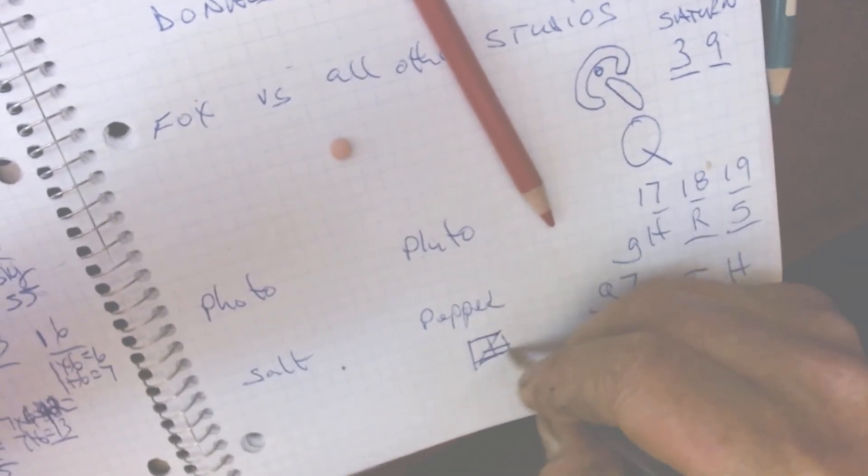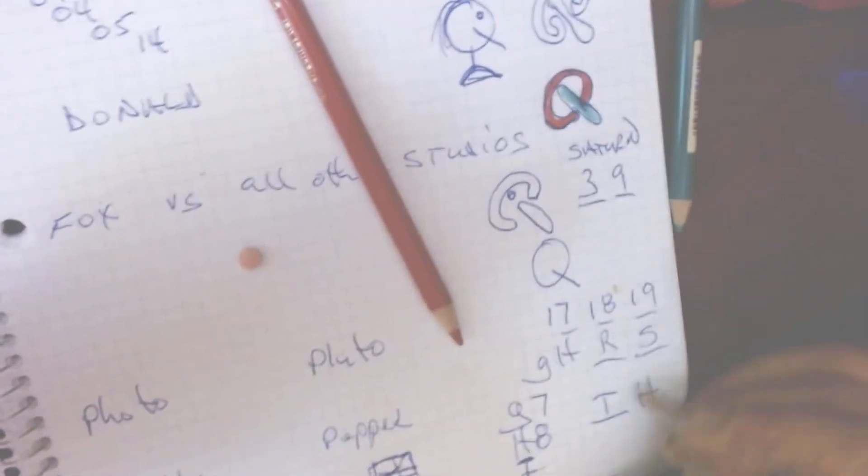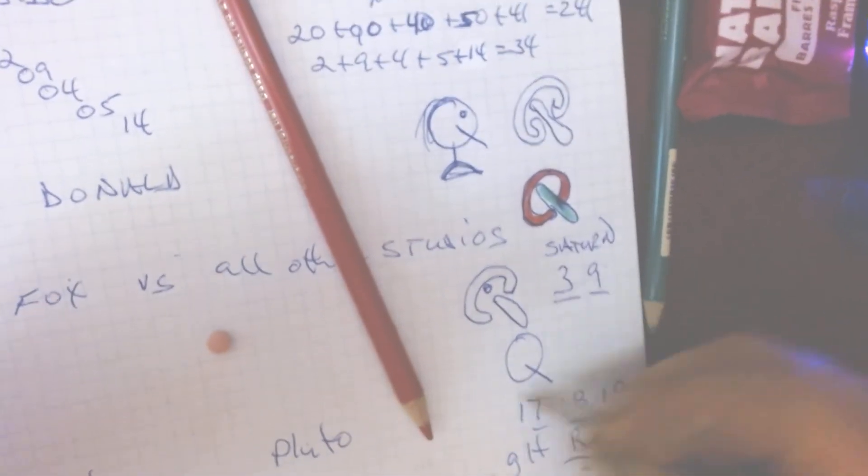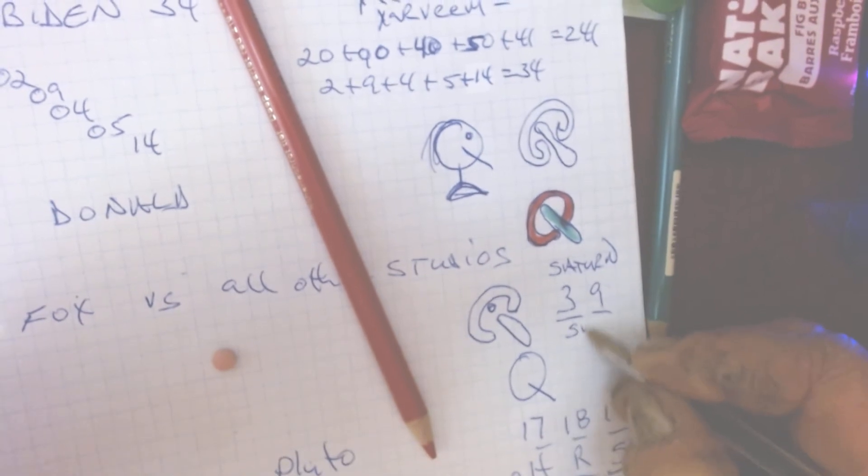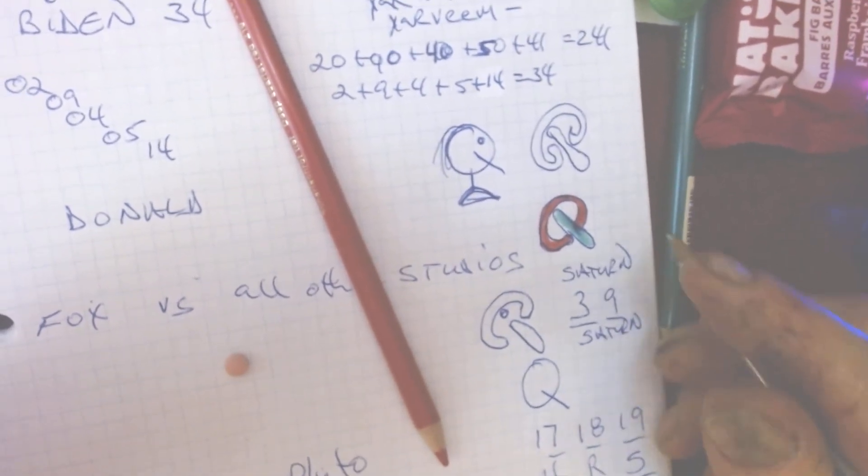And you get your Heinz and it creates... Anyways, your Union Jack flag is created through this. And that's your Q letter and this is Saturn skies as we spoke about in the last video.